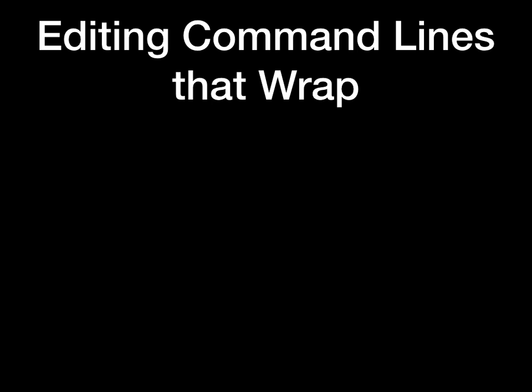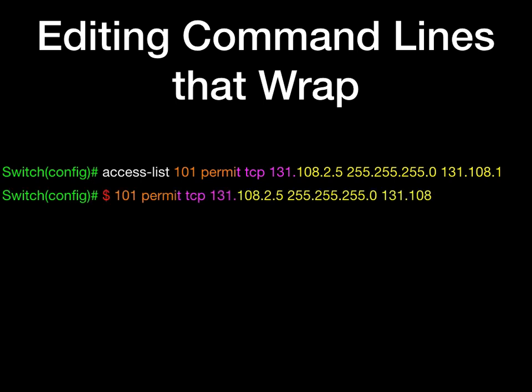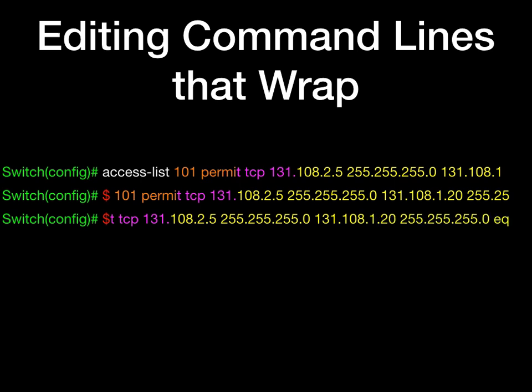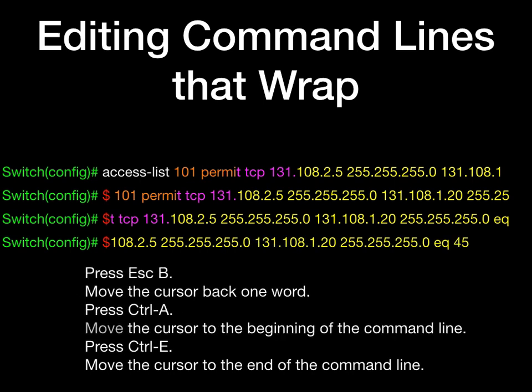You can use a wraparound feature for commands that extend beyond a single line on the screen. When the cursor reaches the right margin, the command line shifts 10 spaces to the left. You cannot see the first 10 characters of the line, but you can scroll back and check the syntax at the beginning of the command. To scroll back to the beginning of the command entry, press Ctrl B or the left arrow key repeatedly. You can also press Ctrl A to immediately move to the beginning of the line. The arrow keys function only on ANSI compatible terminals.